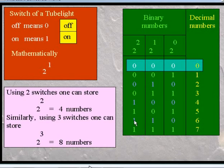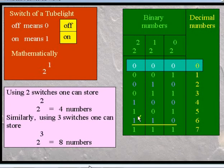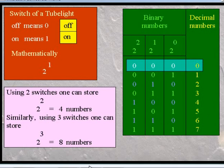Now see the next case: 1 1 0. The first switch is ON, the second switch is ON, and the third one is OFF. The first 1 means 2 raised to power 2, equal to 4. The second 1 means 2 raised to power 1, equal to 2. Hence the total is 4 plus 2 equals 6. So I have covered three aspects: why the computer follows binary, a practical switch example, and the relation between decimal and binary number systems, such as 0 1 0 equals 2 and 1 0 0 equals 4. Thank you.